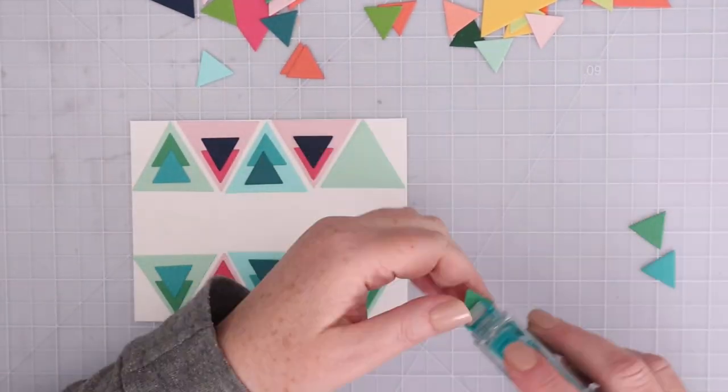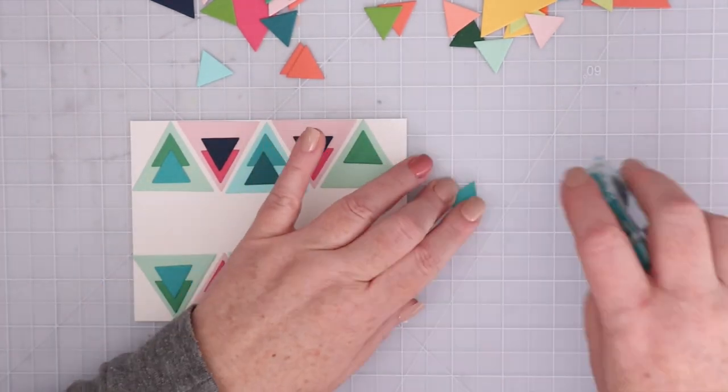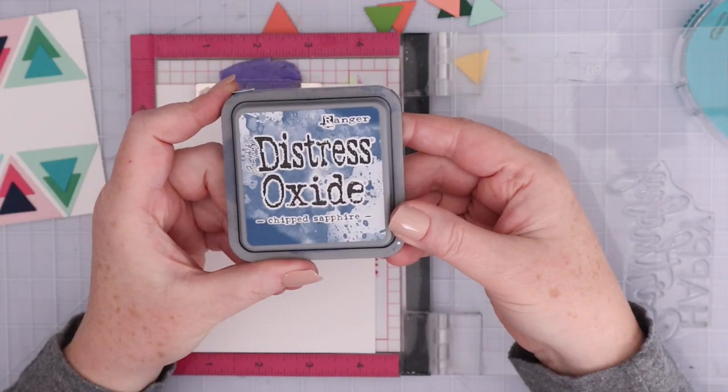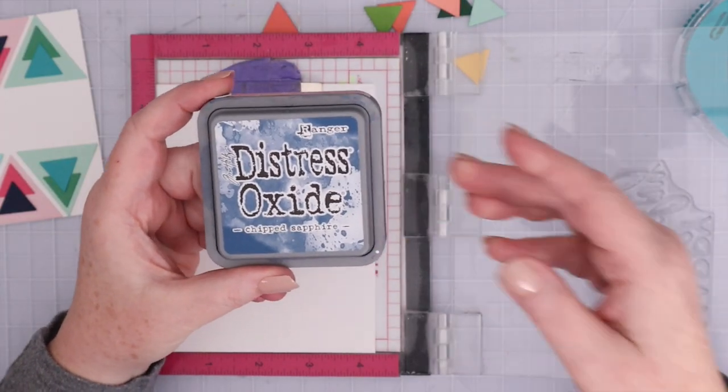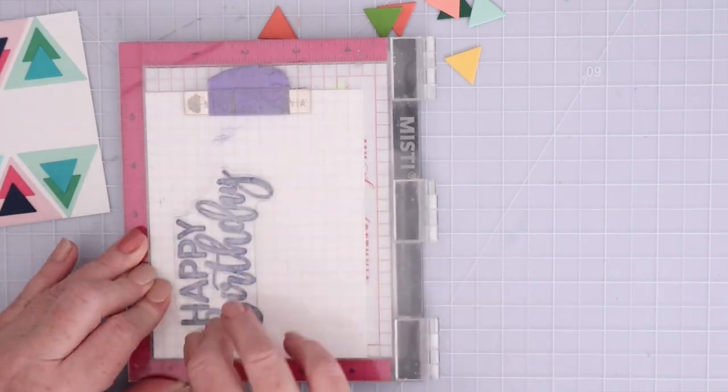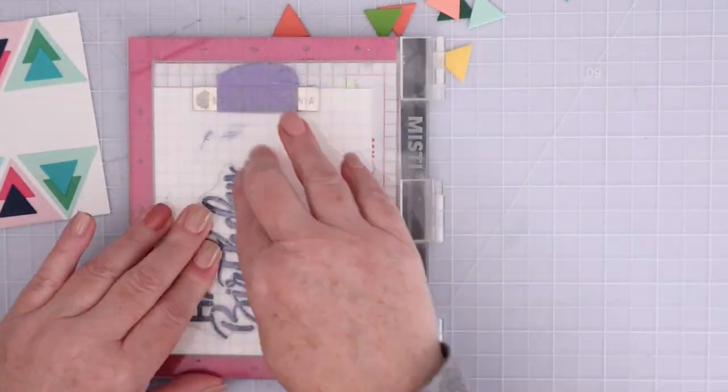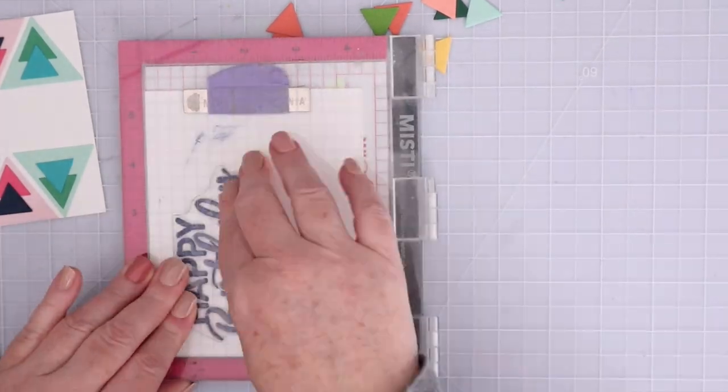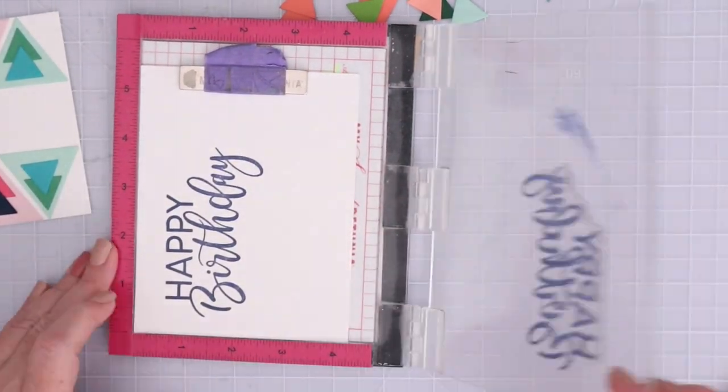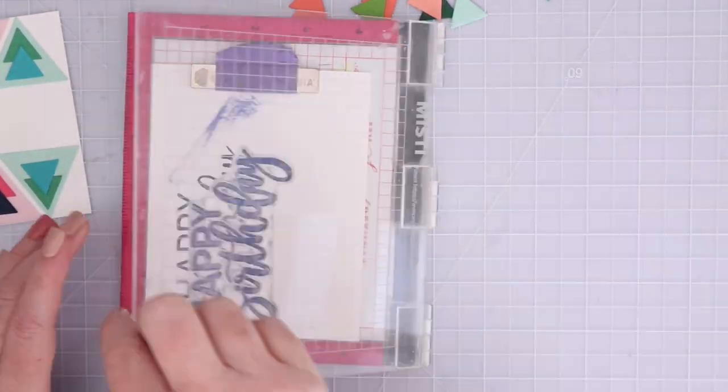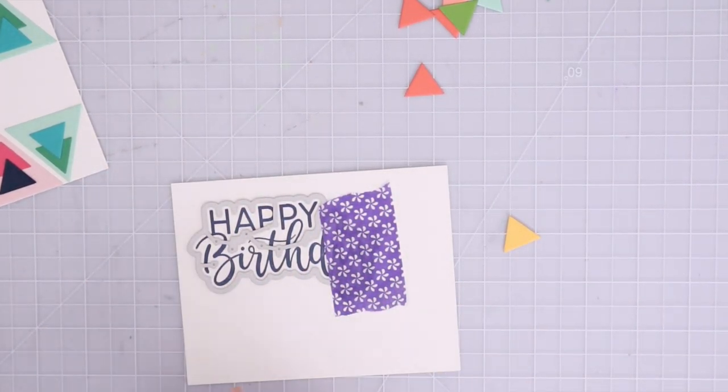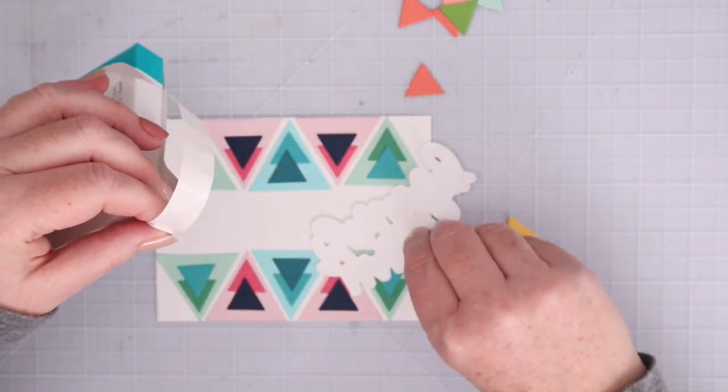I decided on layering two smaller triangles over a larger triangle to create kind of like an arrow look. For my sentiment, I'm going to be stamping with Distress Oxide Chipped Sapphire ink on white cardstock, and I'm using the Waffle Flower Happy Birthday sentiments in my mini MISTI. Thank goodness I used the mini MISTI because my ink pad was so dry that I needed to stamp it many times to get a good impression.